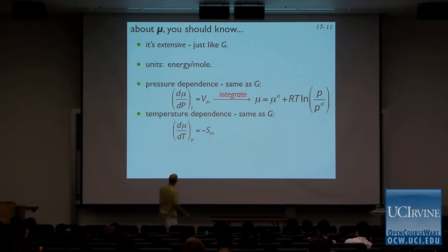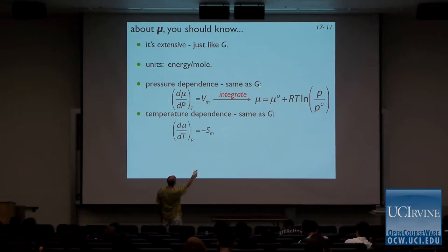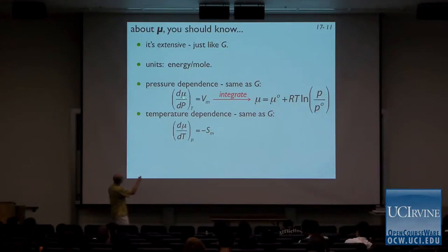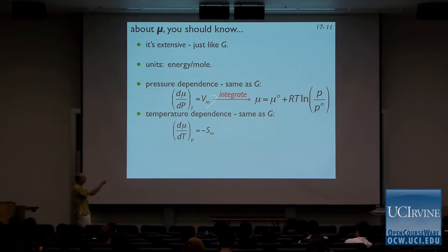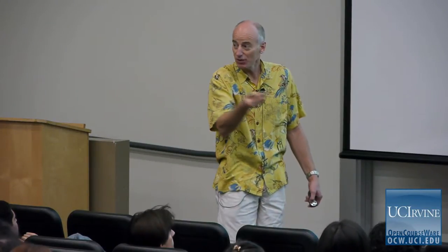What do we need to know about the chemical potential? It's extensive just like G. It has units of energy per mole, just like G. Its pressure dependence is the same as G, and so is the temperature dependence. The partial derivative of the chemical potential of any component with respect to its partial pressure is just equal to the molar volume of that component, and if I integrate that I get an equation that looks just like the one for G, except now it pertains to a single component.